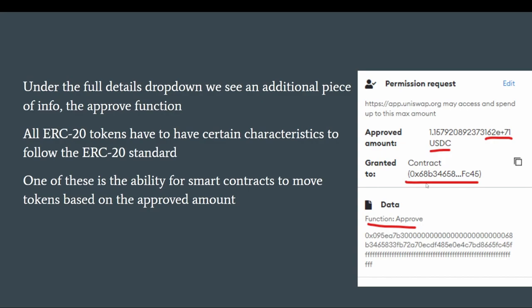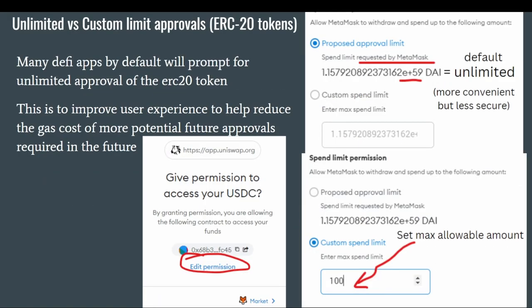Under that dropdown there's an additional approve function. All ERC-20s have the same characteristics because they follow the ERC-20 standard — that's what makes them an ERC-20 token. One of those characteristics is basically the ability for smart contracts to move a token based on an approved amount.